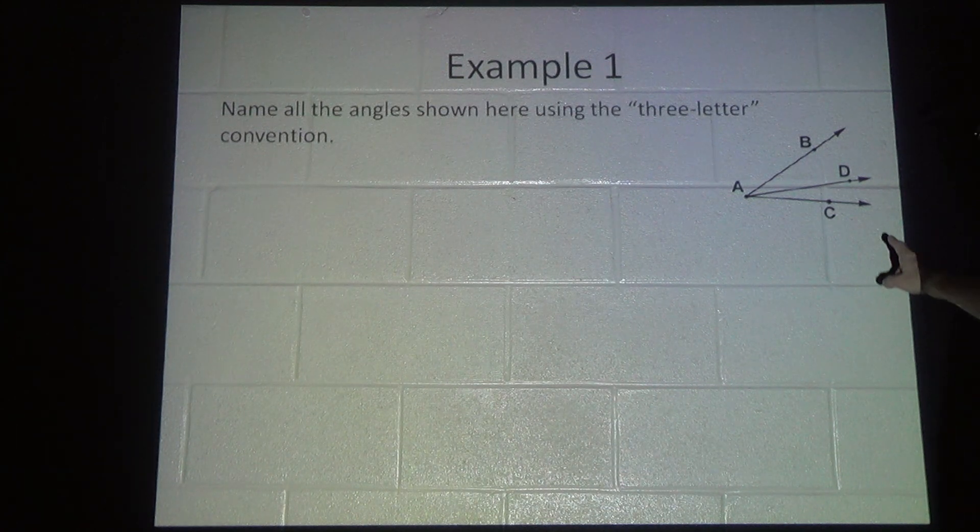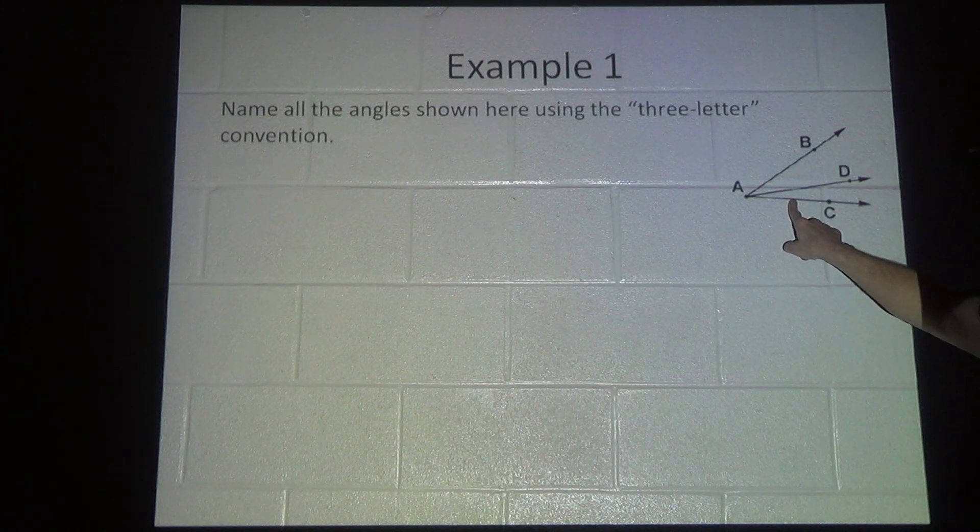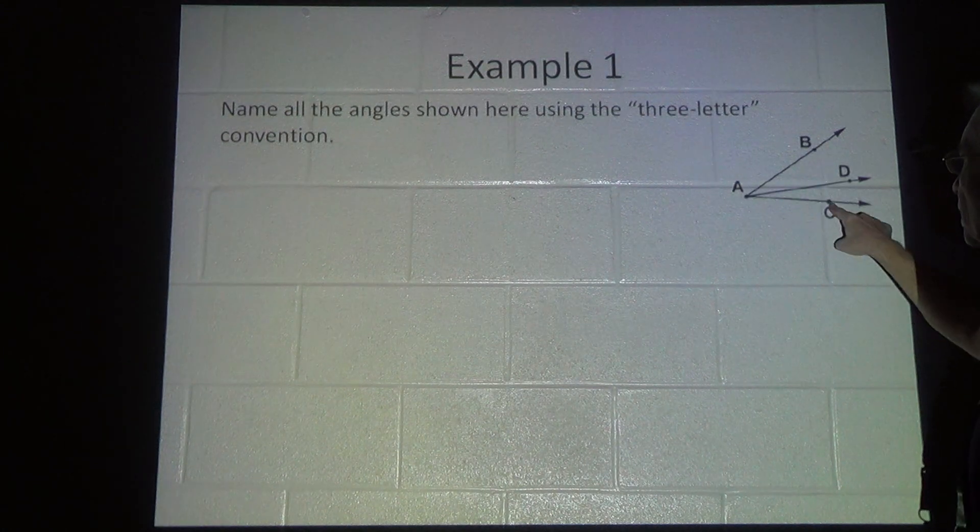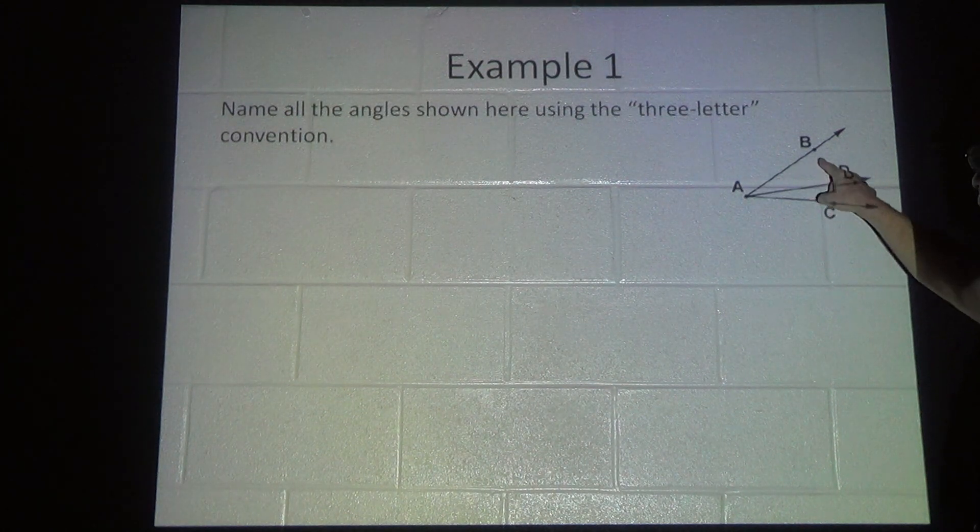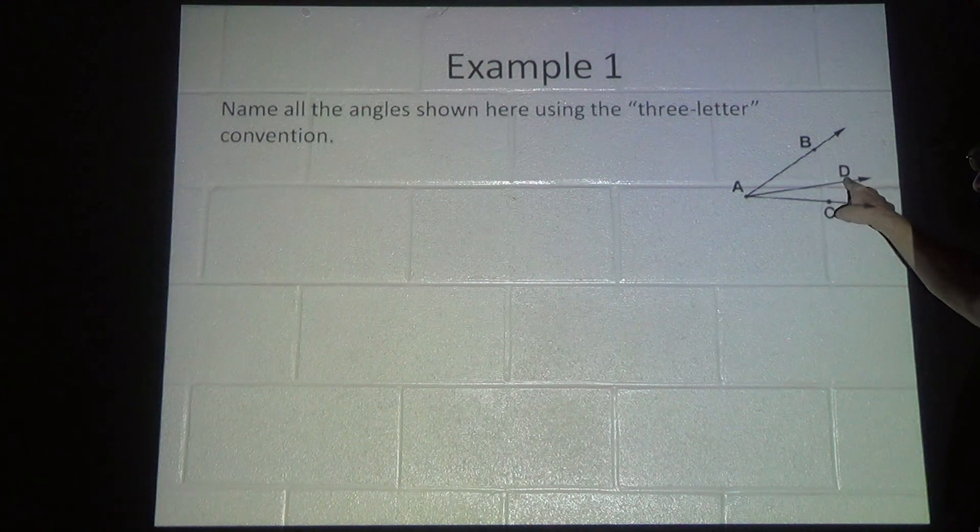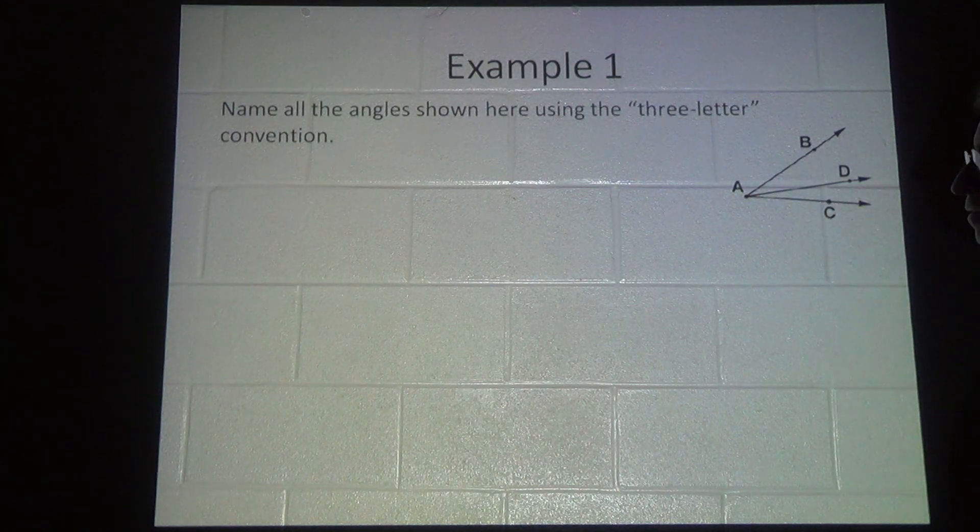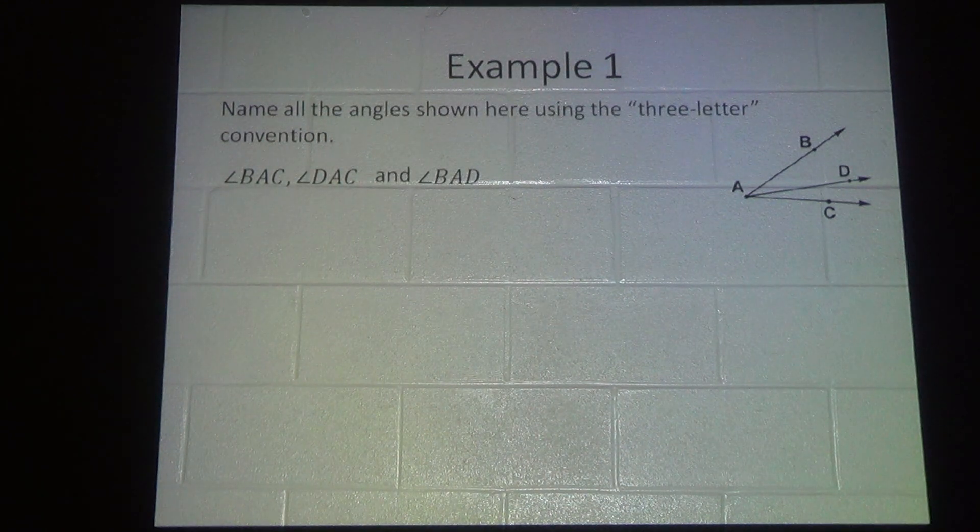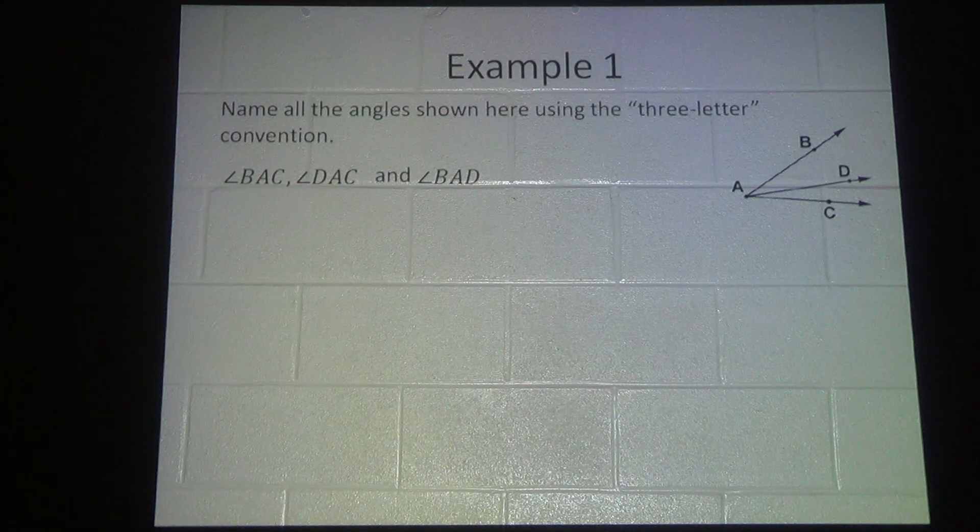They want us to name all of the angles that are shown here using the three letter names. The first one we have is angle BAC, which is the big one. Then we have BAD, which is this one. And we have angle DAC. That's the three angles that are actually here in this diagram.